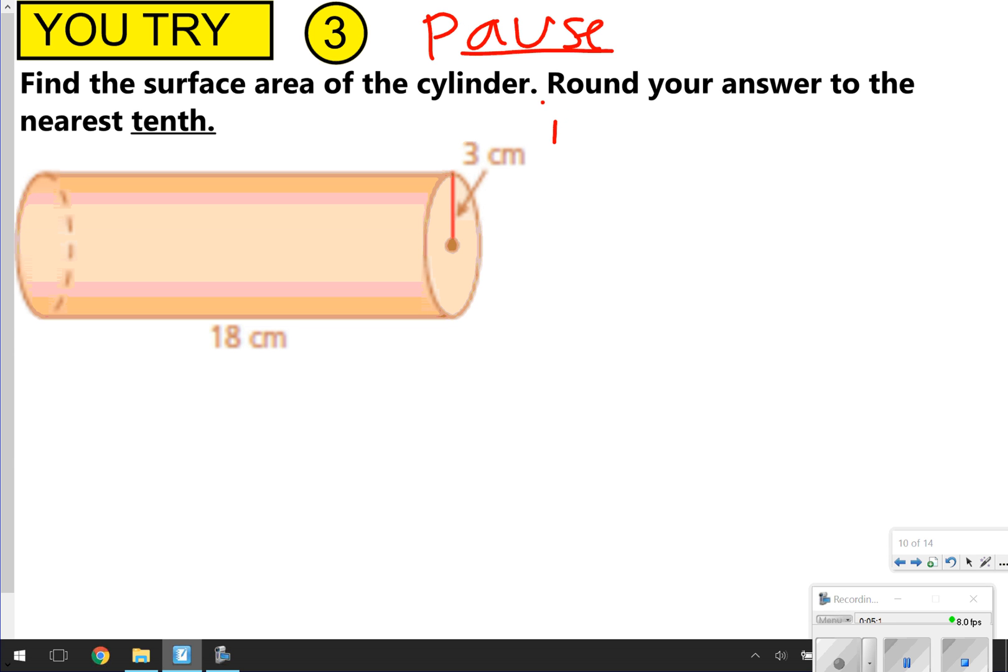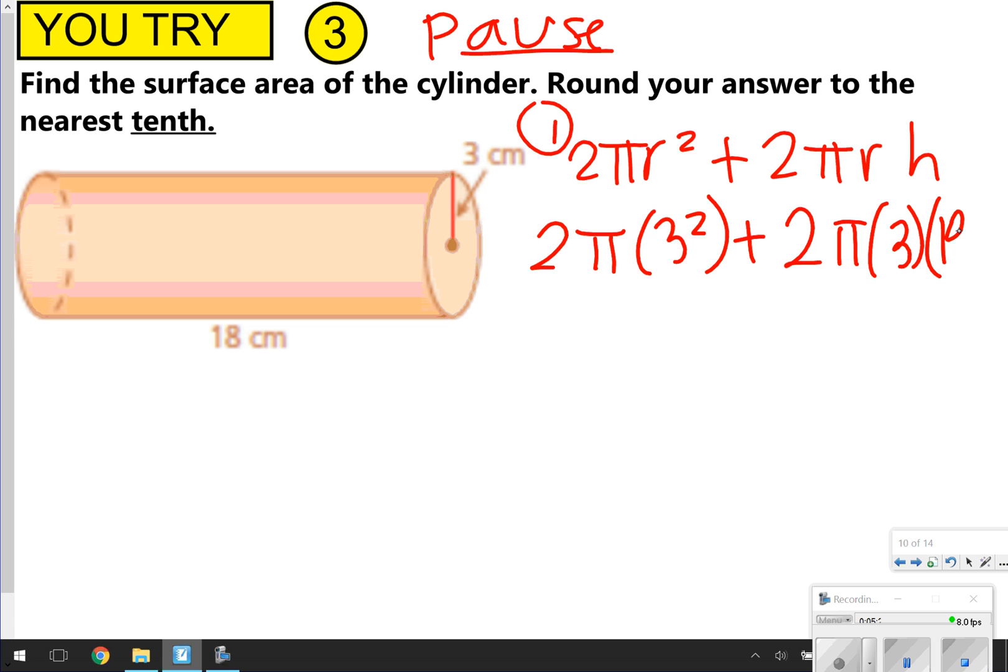So the first thing you're supposed to do is you should have written down your formula. 2πr² + 2πrh. Next thing, I was plugging in our numbers. 2π times 3², because 3 is my radius. And 2π times radius, which is 3, times h, which is 18.